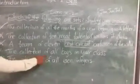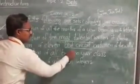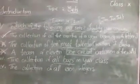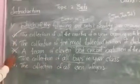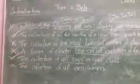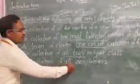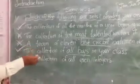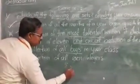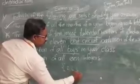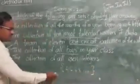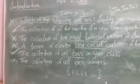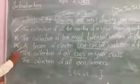Fourth: the collection of all boys in your class — it is clearly mentioned, all boys. How many boys in our class? It is 26 boys. It is well-defined, so it is a set. Fifth: the collection of all even integers. Even integers are 2, 4, 6, 8, and so on — this is a well-defined collection, so it is also a set.